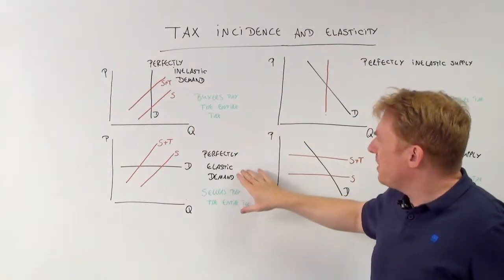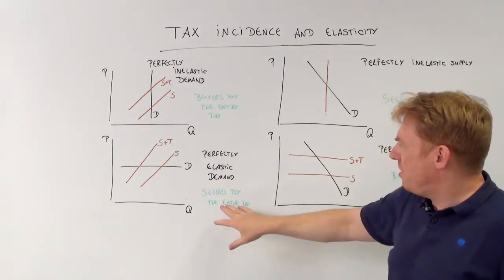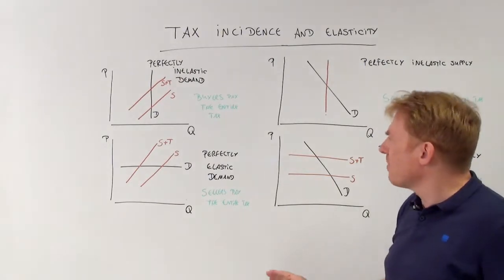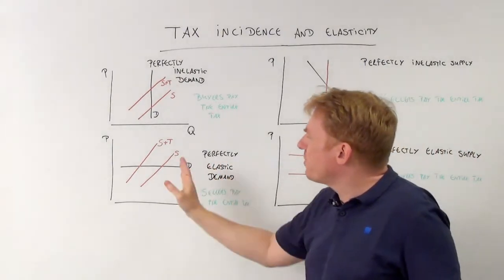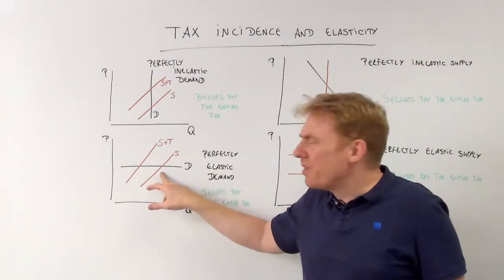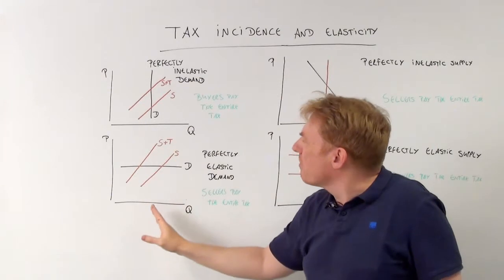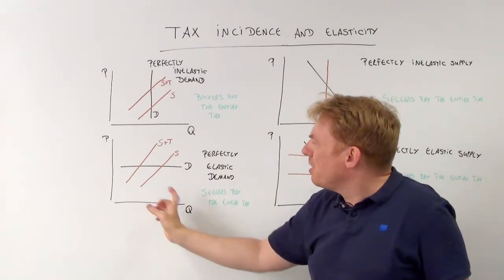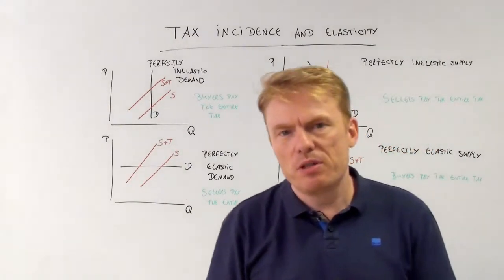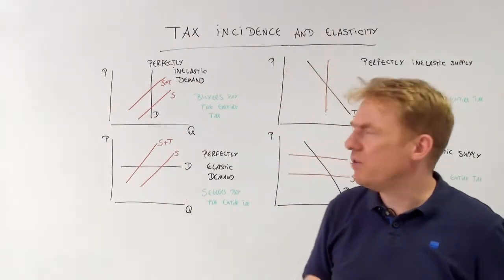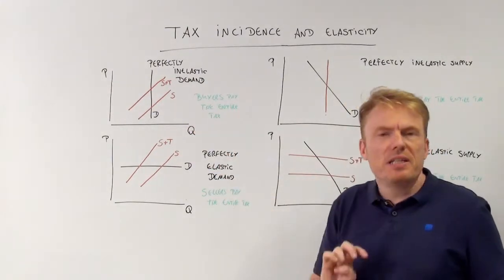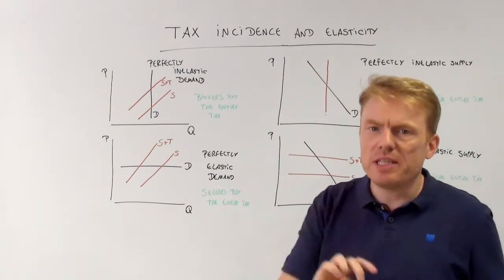With a perfectly elastic demand, it's different. Sellers pay the entire tax. The supply curve shifts to the left and the sellers pay the entire tax because the quantity goes down, the quantity falls, but the price does not change at all. So revenue is just reduced here in this case. That's the case of perfectly inelastic demand and perfectly elastic demand.